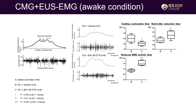In CMG and EUS-EMG recordings, voiding contraction time was significantly smaller in BAY-treated SCI mice than in vehicle-treated SCI mice. These results indicate that sGC activation decreases the tonic EUS activity to increase the intermittent relaxation of EUS during the voiding reflex in SCI mice.